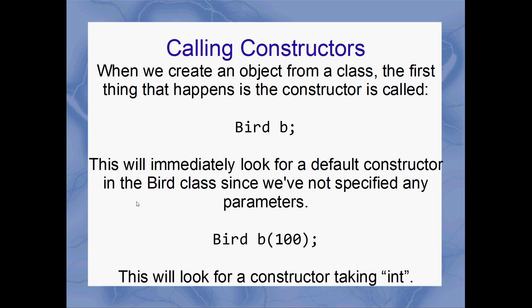You can also call a constructor that takes parameters. If you want to call a constructor that takes an int, you might do something like `Bird b(100)` — you put the parameter in brackets, sort of just like a method call. This is going to look for a constructor taking an int.